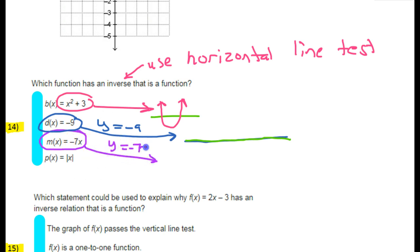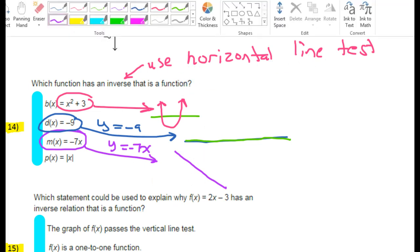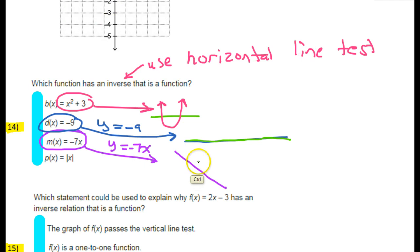The next one is also linear — this is basically the line y equals negative 7x. This is a diagonal line with a negative slope, so it's a downward-facing line. Will the inverse be a function? Yes, because this passes the horizontal line test — a horizontal line only hits one point. So that one is a yes.